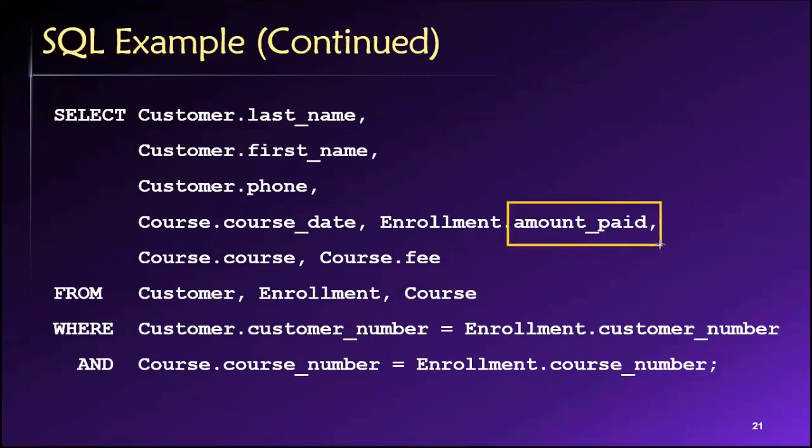So maybe the customer has only paid a down payment on the total fee. So those are the things that we want to appear in the results easy enough. And then the next thing we have to do in this example is tell the database where it needs to look in order to get all this information.